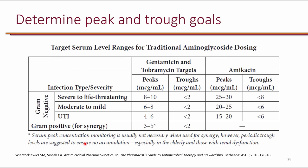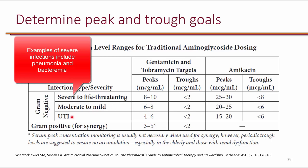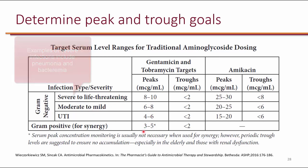The PKPD targets for aminoglycosides include peak-to-MIC ratios. Peak targets by infection severity: severe infections 8–10, moderate to mild infections 6–8, urinary tract infections 4–6, and gram-positive synergy 3–5. The peak indicates efficacy, while the trough indicates safety. We target a trough of less than 2 for all indications to minimize the risk of nephrotoxicity and ototoxicity. Dosing for tobramycin and gentamicin is identical; amikacin has different, higher targets.